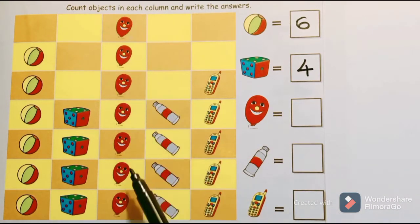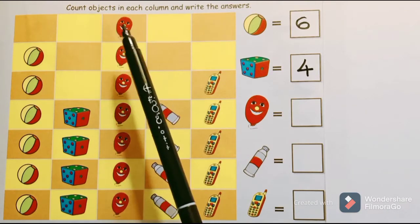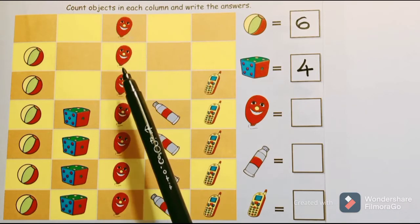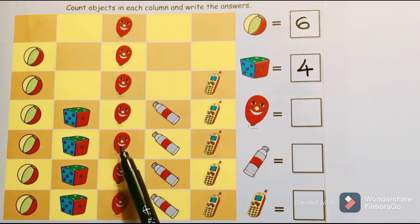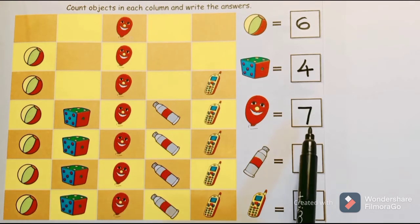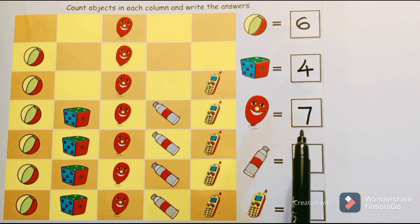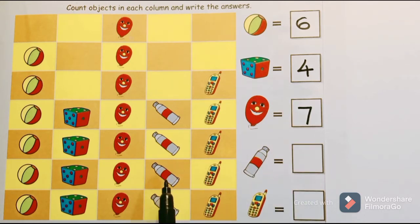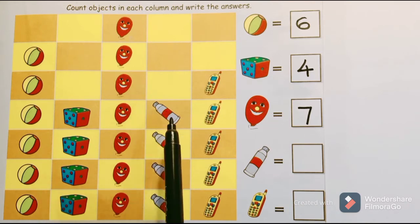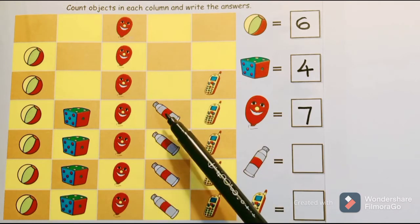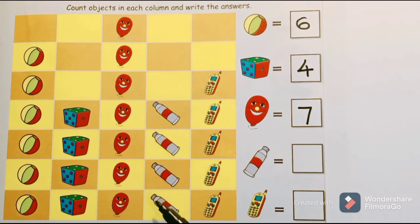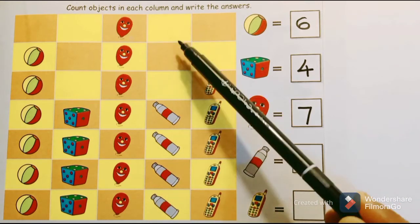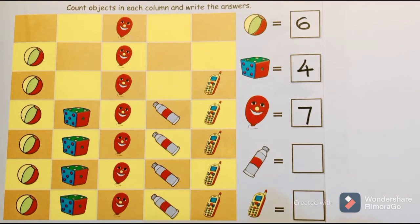The next object is a balloon. Let us count: one, two, three, four, five, six, seven — there are seven balloons. The next object is a bottle. Let us count: one, two, three, four — there are four bottles present in this column.